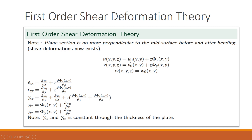The total unknowns are u0, v0, w0, phi_x, and phi_y — so five unknowns, and we will have five equations. The strain fields are: epsilon_xx equals del(u0)/del(x) plus z times del(phi_x)/del(x); similarly epsilon_yy from del(v)/del(y); then gamma_xy, gamma_xz, and gamma_yz. Here gamma_xz equals phi_x(x,y) plus del(w0)/del(x), and gamma_yz equals phi_y plus del(w0)/del(y). These shear strains are independent of the z axis, so gamma_xz and gamma_yz are constant throughout the thickness of the laminate.